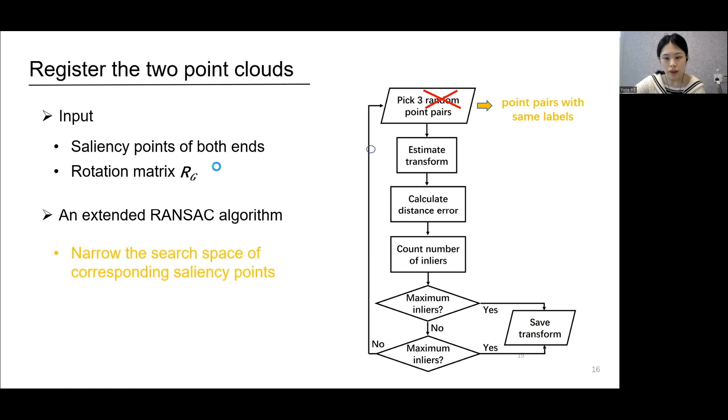Second, we quickly check whether an estimation is a valid one by comparing the similarity of the estimated rotation matrix R and Rg. When the similarity is low, we terminate an iteration early to reduce unnecessary computation.